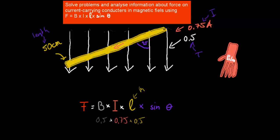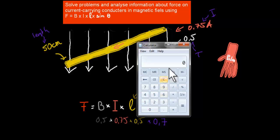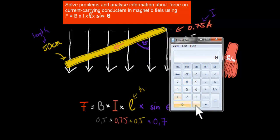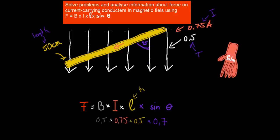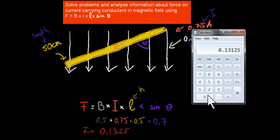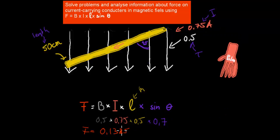And then times sine theta. Our magnetic field and conductor form an angle of 45 degrees between them. If you put sine 45 into your calculator you get about 0.7. So we put it all in the calculator: 0.5 times 0.75 times 0.5 times 0.7, and that is equal to a force of 0.131 Newtons.